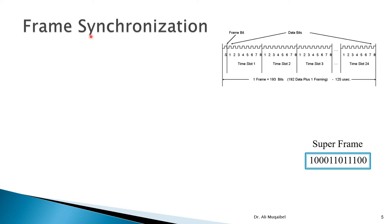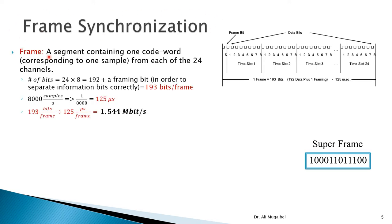Now we focus on framing and synchronization. A frame is defined as a segment containing one code word — one sample — from each of the 24 channels. Each time slot contains eight bits; the first eight bits represent channel one, the next eight represent channel two, and so on. The total number of bits for 24 users is 8 × 24 = 192 bits, plus one additional framing bit, giving 193 bits per frame for the T1 system.